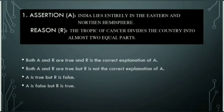Options are: Option A - Both A and R are true and R is the correct explanation of A. Option B - Both A and R are true but R is not the correct explanation of A.